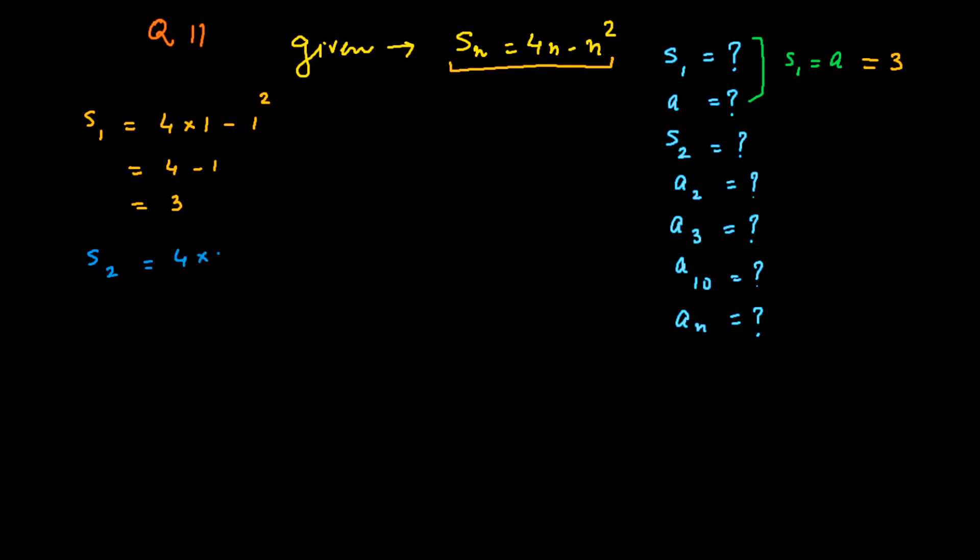S2 equals 4(2) minus 2 squared, that is 8 minus 4 equals 4. We know a2 equals S2 minus S1. S2 is 4 and S1 is 3, so a2 equals 1.